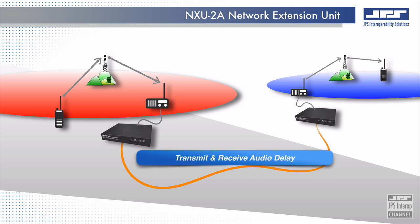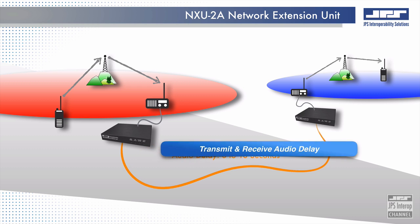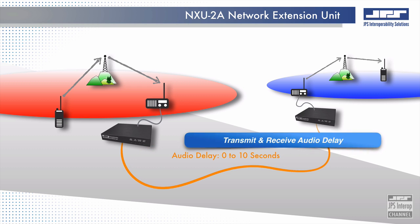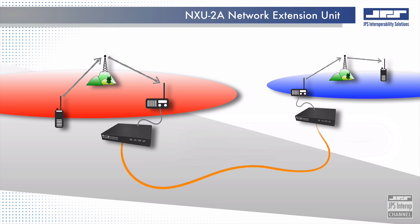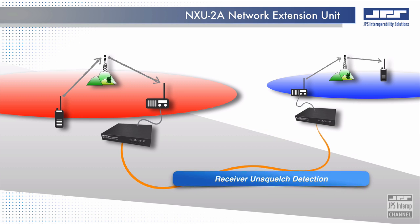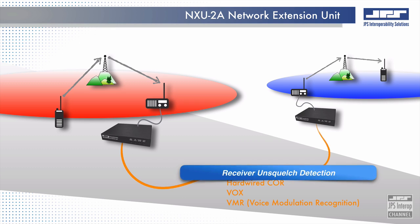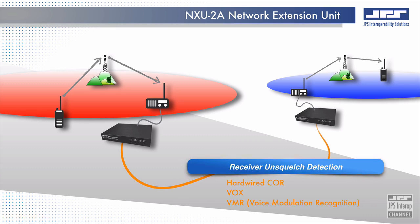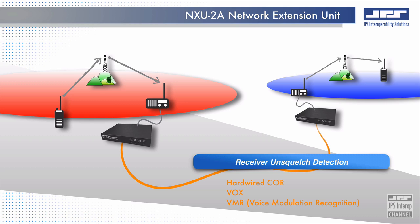Up to 10 seconds of transmit and receive audio delay can be applied to ensure that the first syllables of any voice transmission are not lost due to inherent process delays such as trunking or TETRA radio systems. Detection of a fully quieted receiver is accomplished using either hardwired core signaling, VOX, or voice modulation recognition, where human speech is detected in the presence of intrinsic radio noise such as single sideband and HF radio systems.